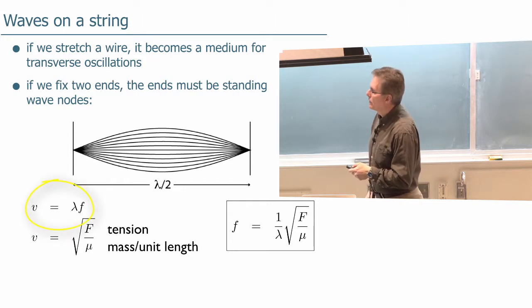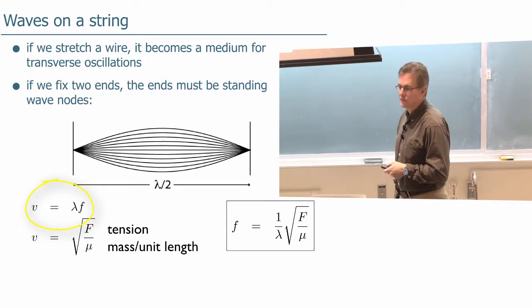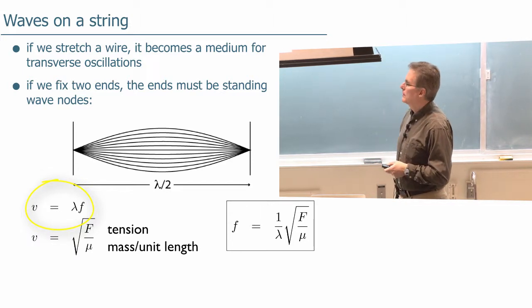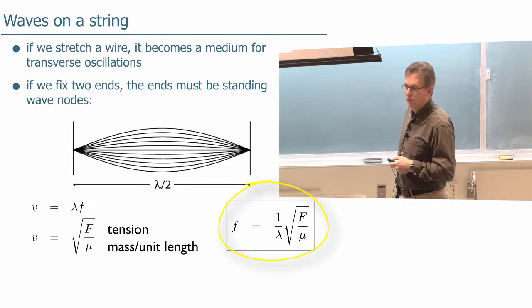Now we know that the velocity of any wave is lambda times the frequency, right? Something that should be deeply etched in your mind now. And so we put these two equations together and solve for the frequency, we find that it's equal to 1 over lambda times square root of F over mu.